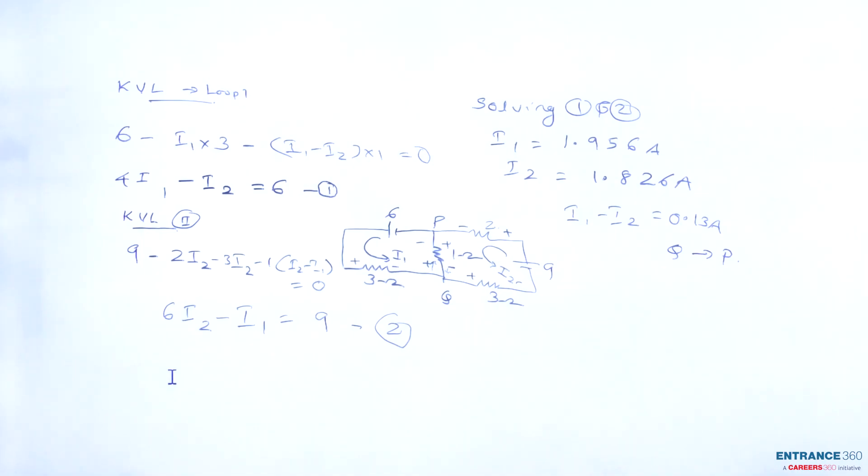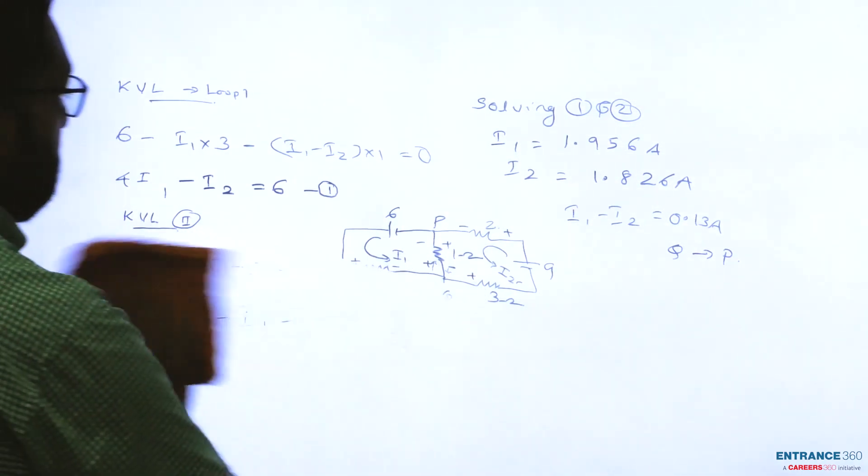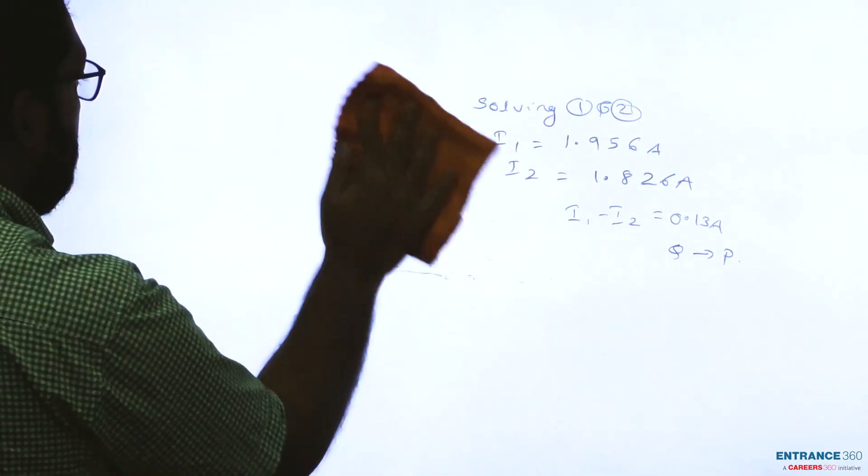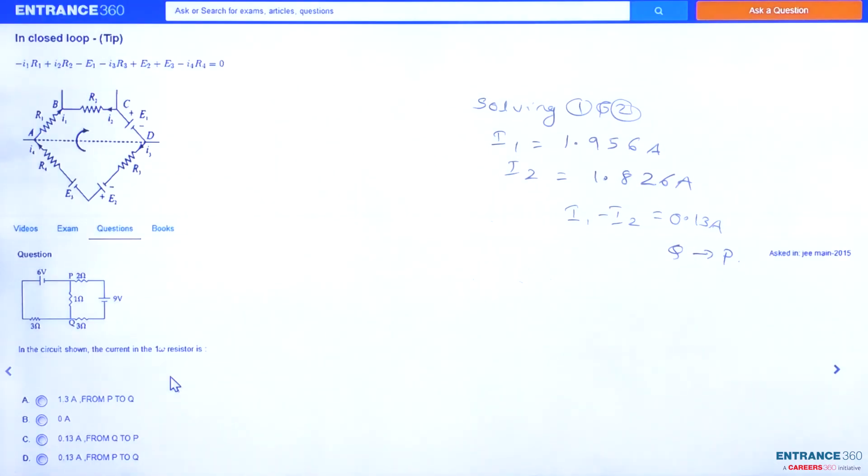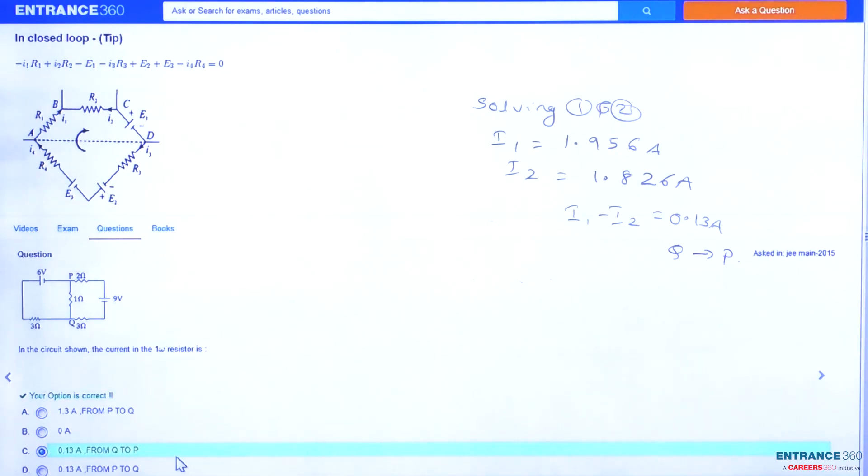Now let's check the options. 0.13 ampere from Q to P. C is the right answer.